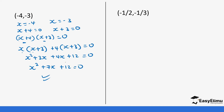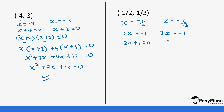Now let's look at fractions. We have x = -1/2 and x = -1/3. For x = -1/2, multiplying both sides by 2 gives 2x = -1. For x = -1/3, multiplying both sides by 3 gives 3x = -1. So this is the same as 2x + 1 = 0 and 3x + 1 = 0.